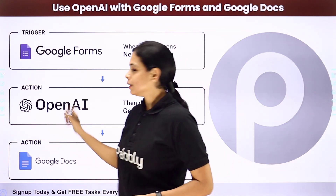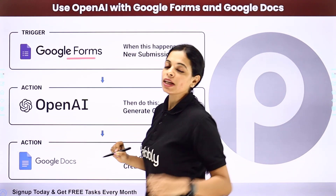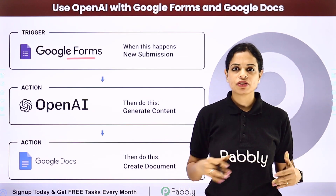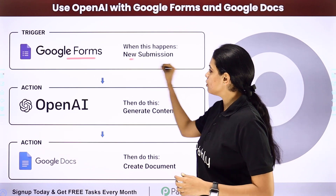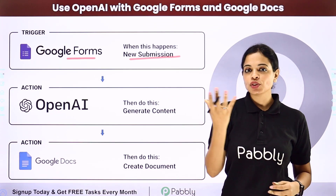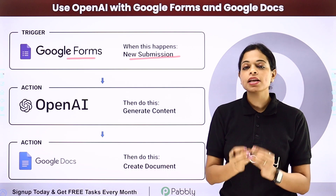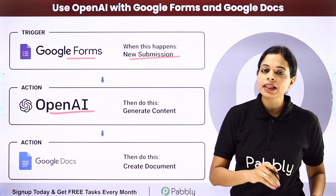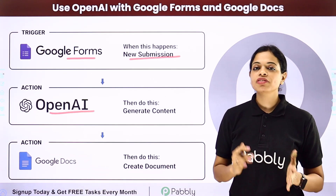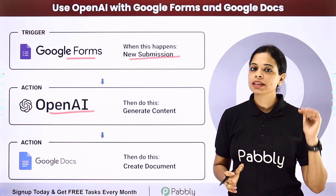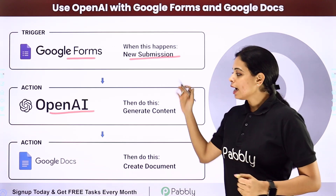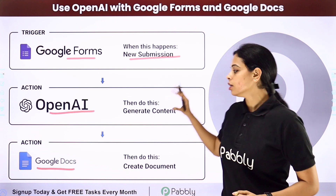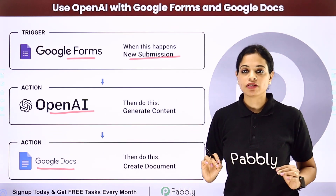Let's say that you are using a form builder application, which is Google Forms. Every time a form is submitted — let's say there is an employee engagement survey in your office — the data received through those forms requires content generation using OpenAI. OpenAI is an artificial intelligence and deployment company that helps you in generating content. Then you want to create a document, append the generated content in that document, and save it.